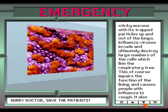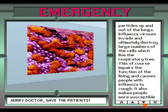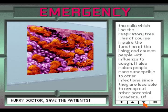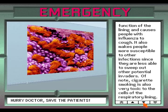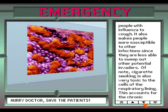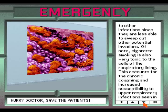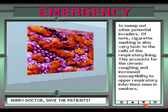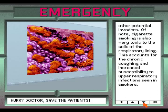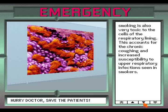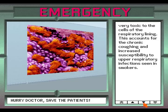Influenza viruses invade and ultimately destroy large numbers of the cells which line the respiratory tree. This impairs the function of the lining and causes people with influenza to cough. It also makes people more susceptible to other infections since they are less able to sweep out other potential invaders. Of note, cigarette smoking is also very toxic to the cells of the respiratory lining, which accounts for the chronic coughing and increased susceptibility to upper respiratory infections seen in smokers.